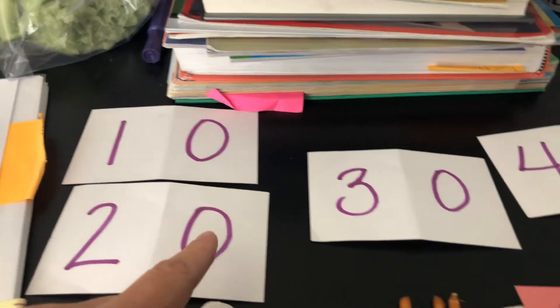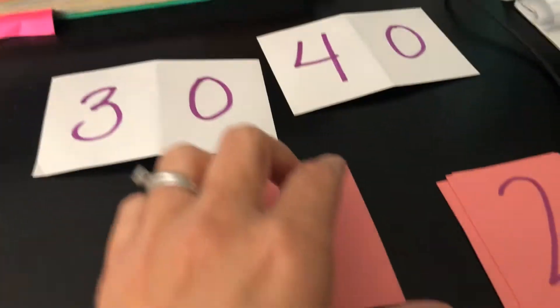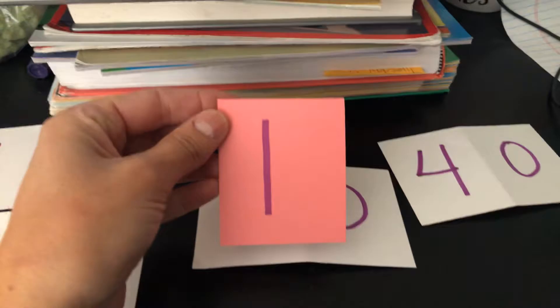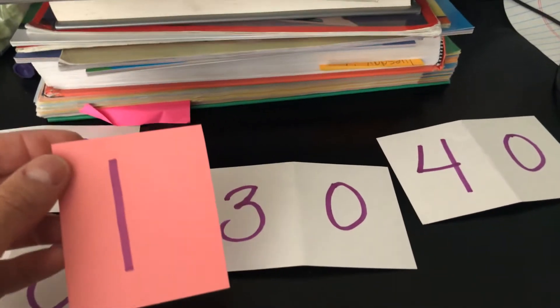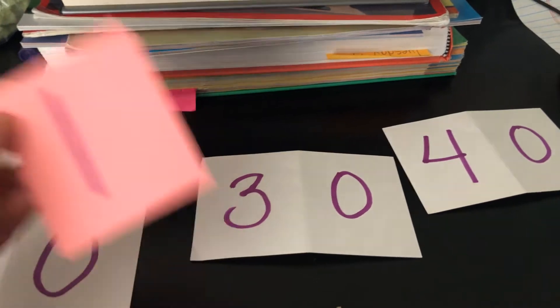That way, my next step was I took index cards and cut them in half, and I wrote the numbers 1 through 9 so that I could make my own little secret code cards.